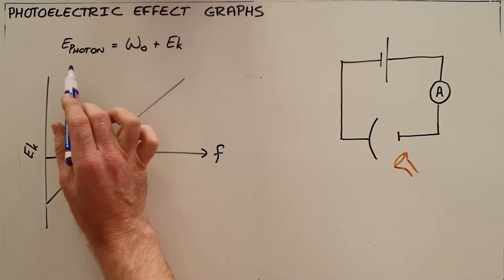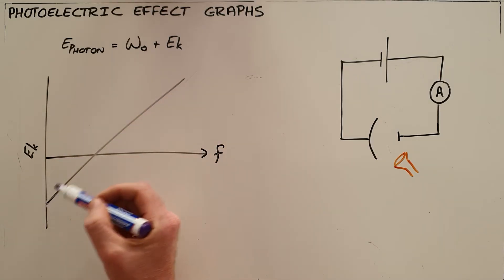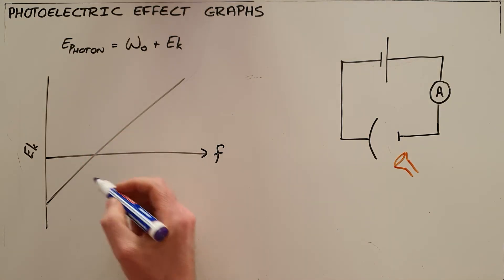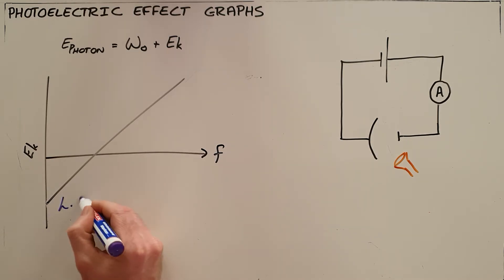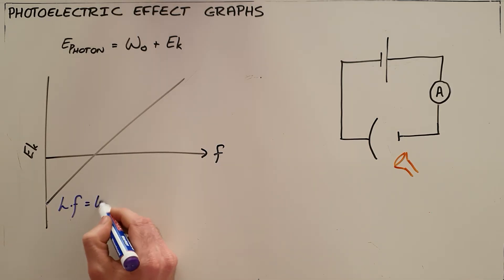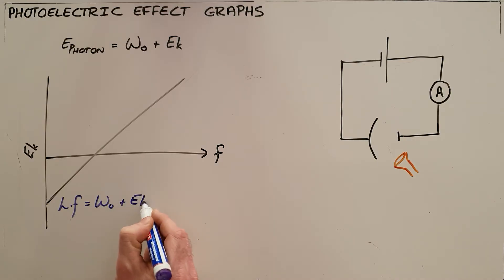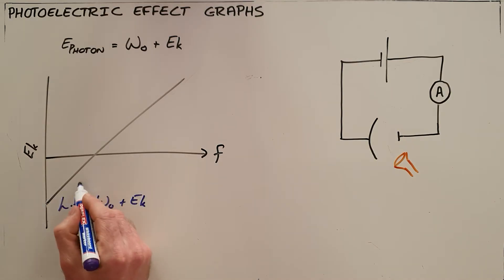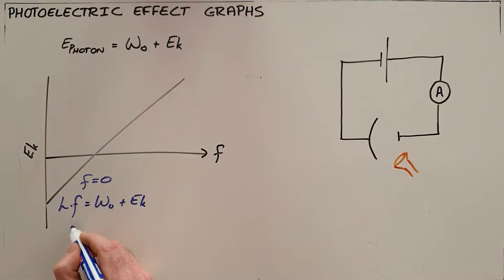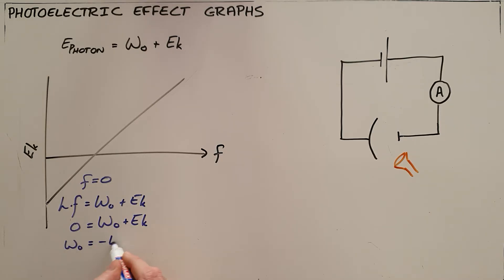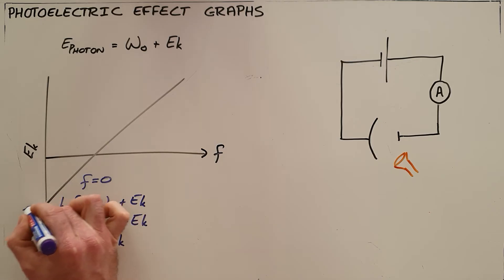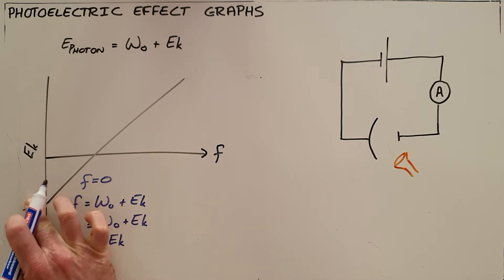We can use this formula to determine what the x and y intercepts of this graph mean. For the y-intercept, we rewrite the formula: the energy of the photon equals Planck's constant times frequency, which equals the work function plus the kinetic energy. At the y-intercept, frequency equals zero, so zero equals the work function plus kinetic energy, meaning the work function equals negative kinetic energy. Therefore, the y-intercept on this graph is the negative work function.